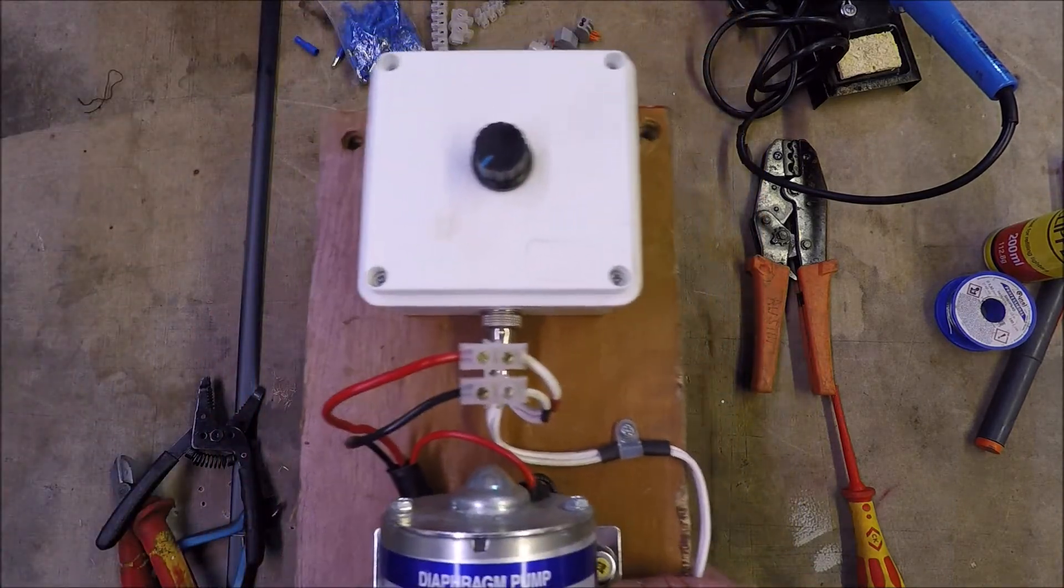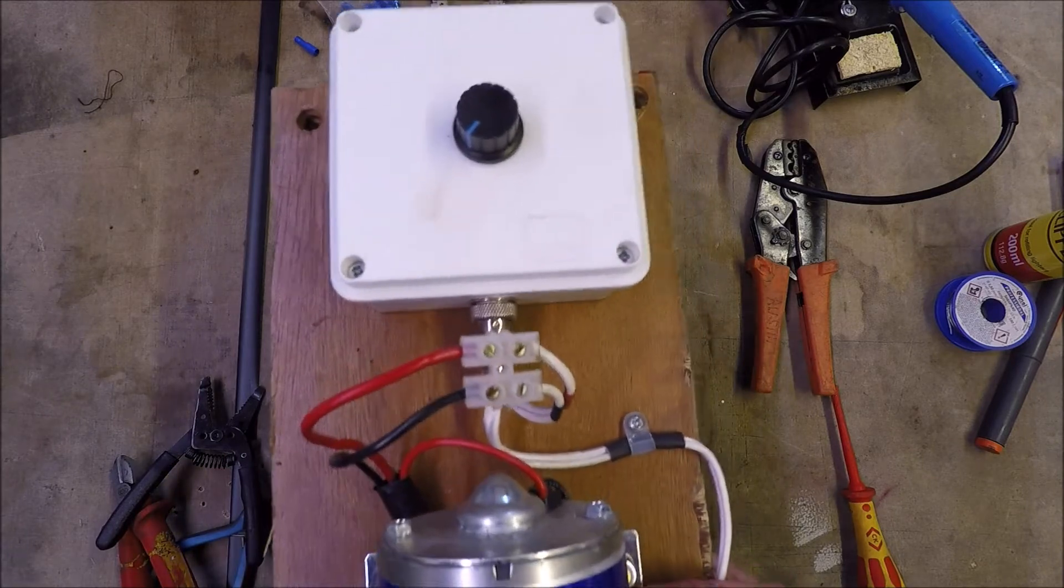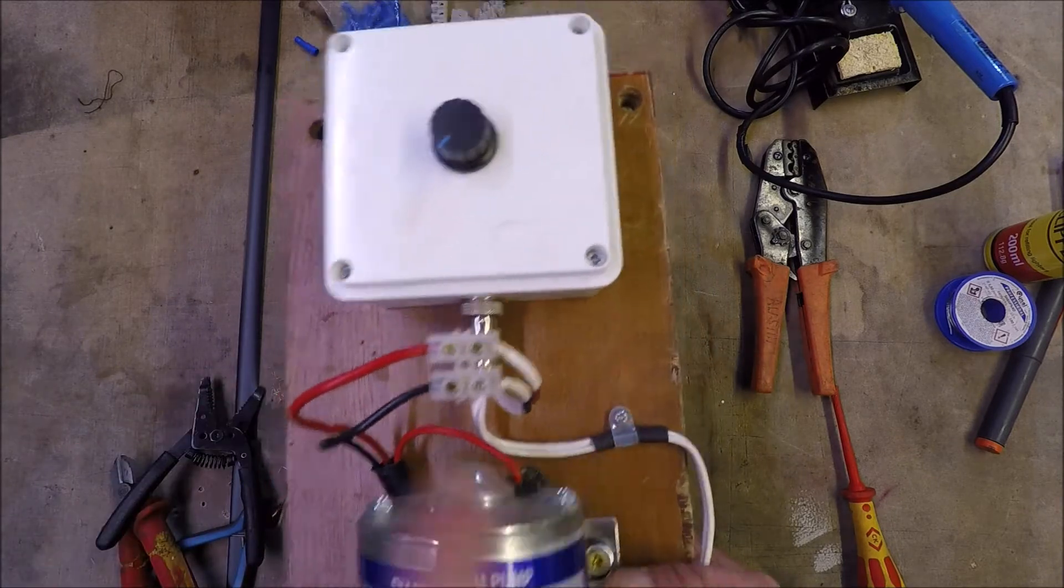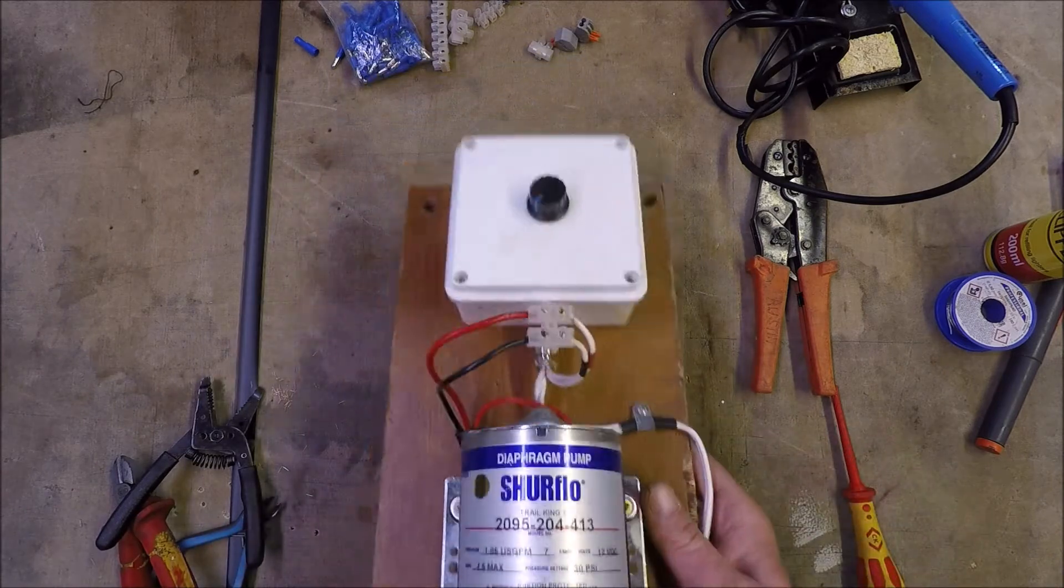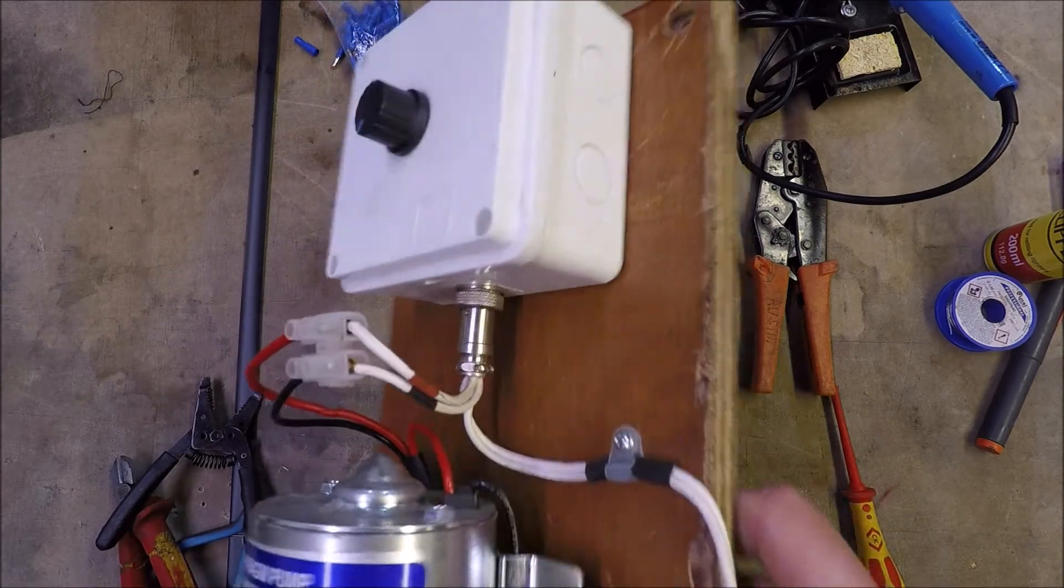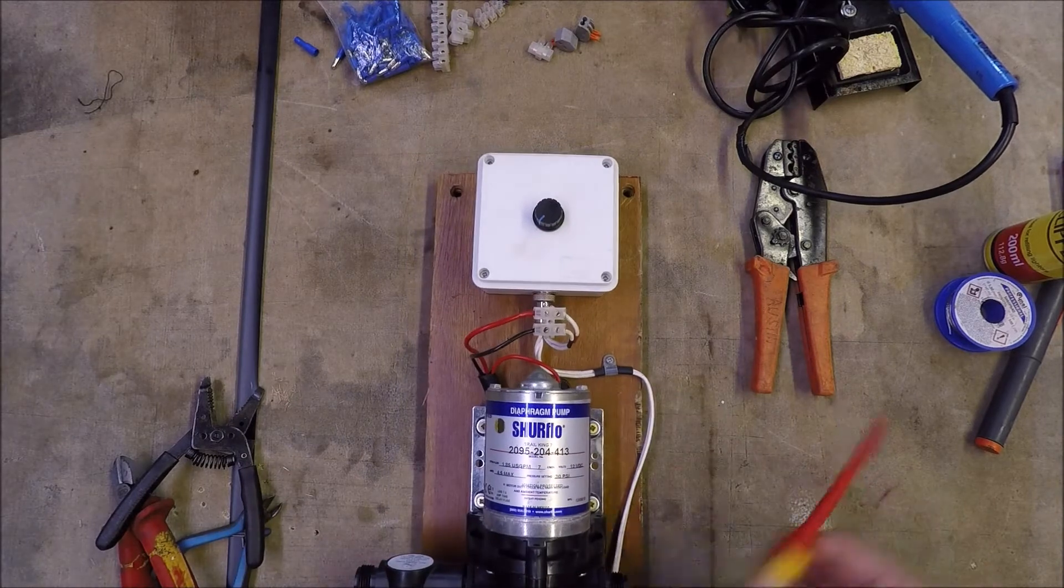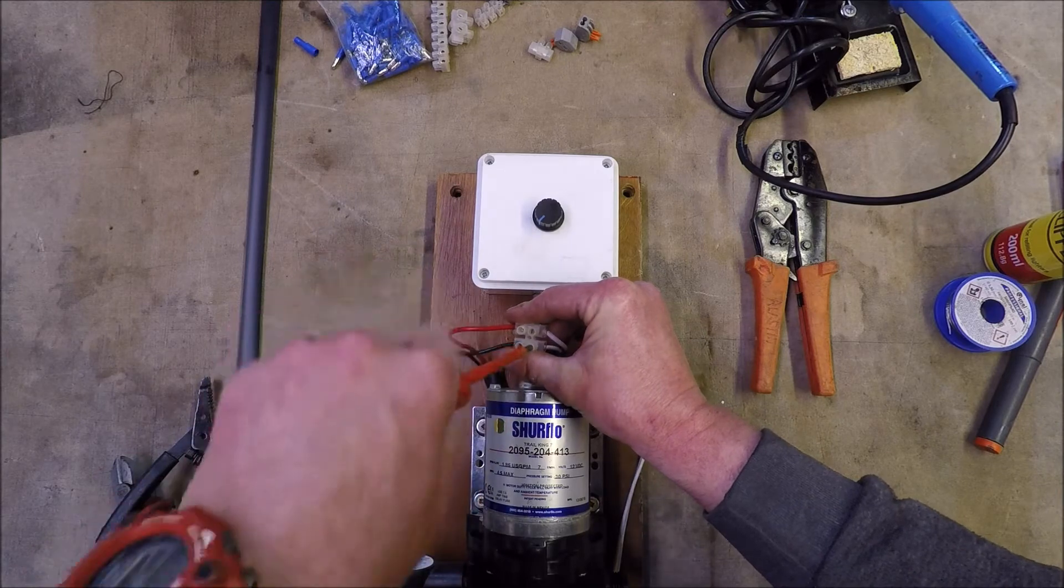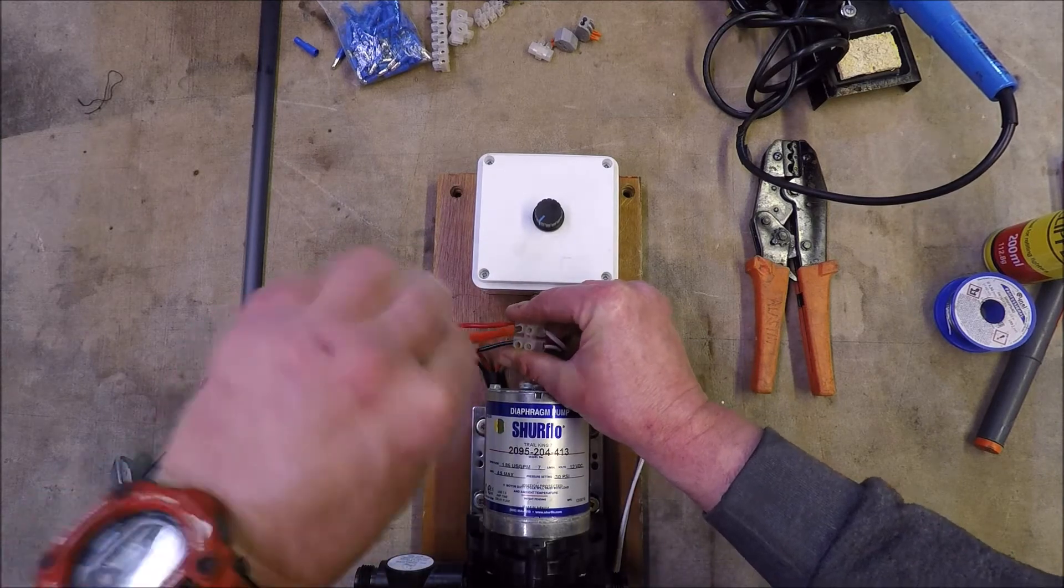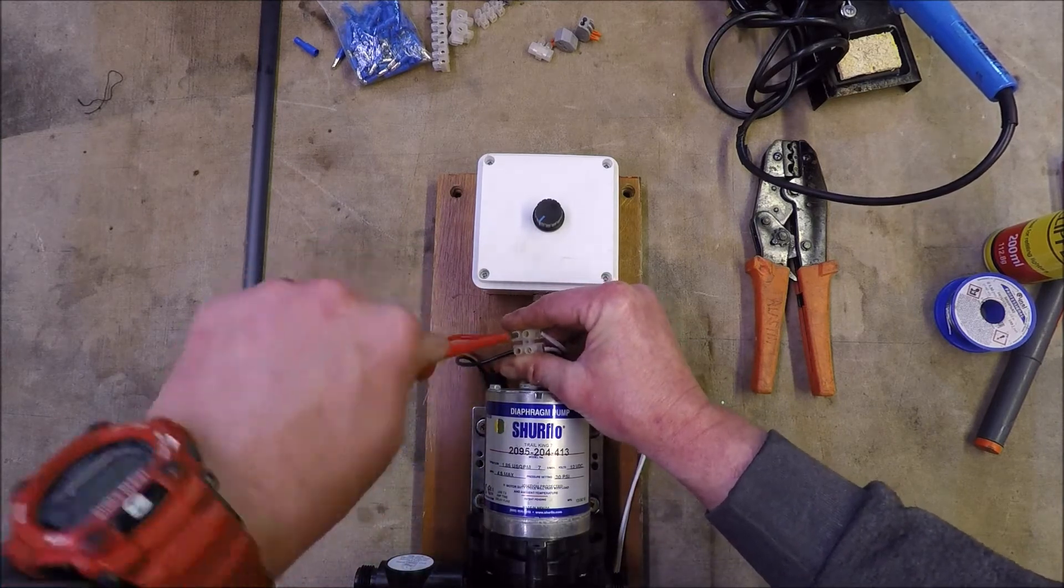Using a chocky block or terminal block style connector, positive to positive, negative to negative, and they're tight and they're not going to short out because they've got no bare wire exposed. So that's done. We'll remove these, unscrew them. So now we've done a few processes.